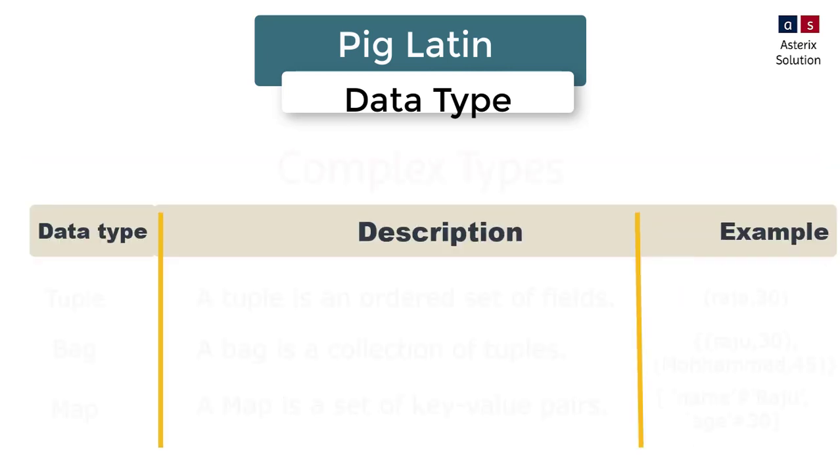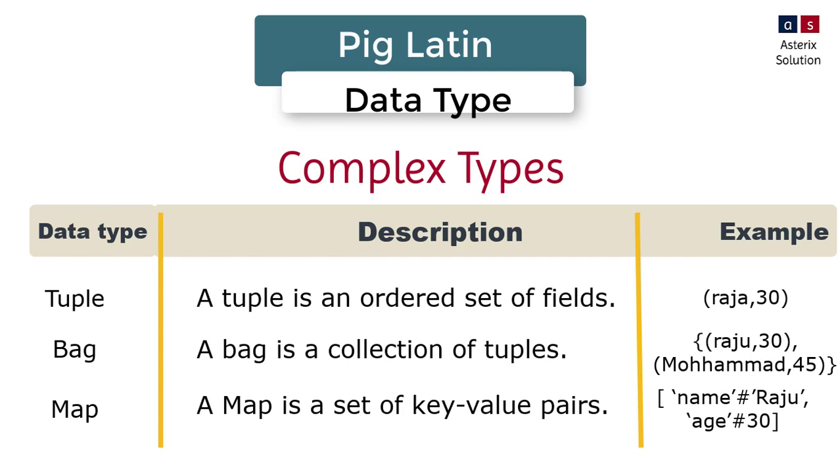You also have a set of complex types. A tuple is basically a single row which will be in brackets, round brackets. Whereas you have a bag. In the bag, you have curly braces, and the curly braces contain lots of other tuples inside it. So a tuple is represented using a round bracket, whereas a bag is represented using a curly brace.